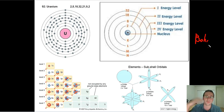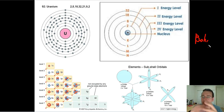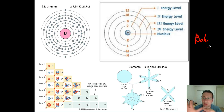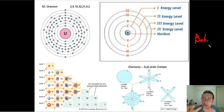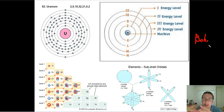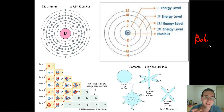Even though the electrons flow chaotically, they will be more likely to stay in certain areas because they try to avoid each other since they're all negatively charged. They space themselves out around the nucleus in layers of energy to avoid touching each other, since they all repel each other. Even as they are attracted by the positive nucleus, they also repel each other — and that's what creates the energy layers you see in drawings of atoms. This is the Bohr model of the atom.